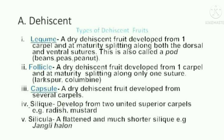Examples of legumes include beans, peas, and peanut. Follicle: a dry dehiscent fruit developed from one carpel and at maturity splitting along only one suture. Examples include larkspur and columbine. Capsule: a dry dehiscent fruit developed from several carpels. Silique: developed from two united superior carpels; examples include radish and mustard. Silicle: a flattened and much shorter silique; example includes penny cress.